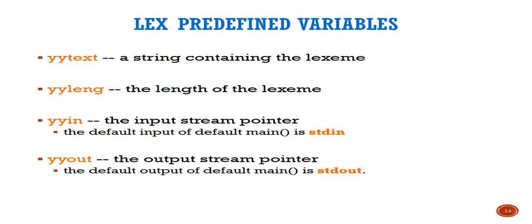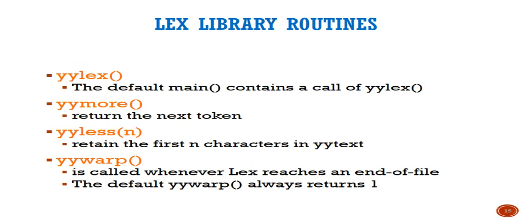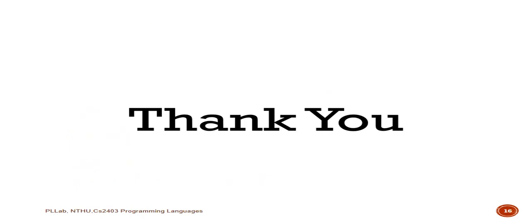These are predefined variables in Lex: yytext is a string containing the lexeme; yyleng is the length of the lexeme; yyin is the input stream pointer; yyout is the output stream pointer. Some Lex library routines include yylex(), yymore(), yyless(), unput(), and yywrap().